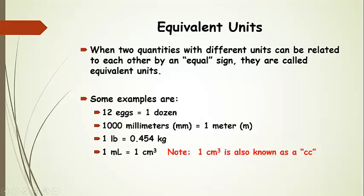Another one, maybe less familiar, is a millimeter. Millimeters are really small compared to meters, so it takes 1,000 millimeters to make one meter. We can say the same thing about pounds and kilograms: one pound is equal to 0.454 kilograms. And finally, one milliliter is actually equal to one cubic centimeter. Both of these are volume units — one is one one-thousandth of a liter, and the other is centimeter cubed. In the health fields, a cubic centimeter is known as a CC.